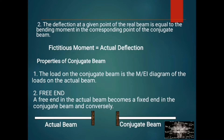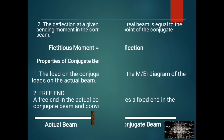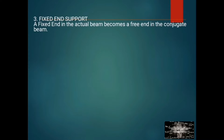For the actual beam and conjugate beam comparison: a free end in the actual beam becomes a fixed end in the conjugate beam, and a fixed end in the actual beam becomes a free end in the conjugate beam. Number 3: a fixed end support in the actual beam becomes a free end in the conjugate beam.